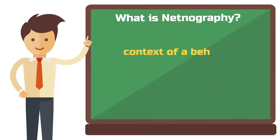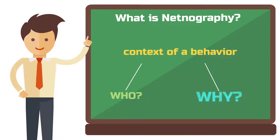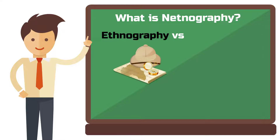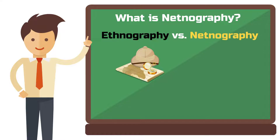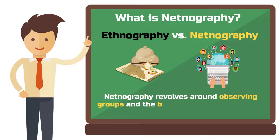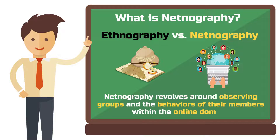Instead, Netnography seeks to understand the context of such behaviors, shedding light on who exhibits certain behaviors and why. If you familiarize yourself with the objectives of classic field research — ethnography — you'll instantly grasp the netnographic approach. It revolves around observing groups and the behaviors of their members. Netnography simply transposes this research approach onto the online domain.